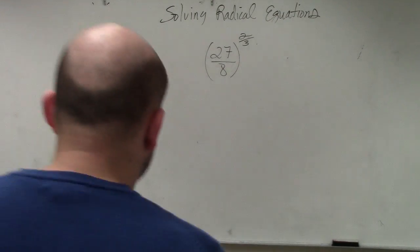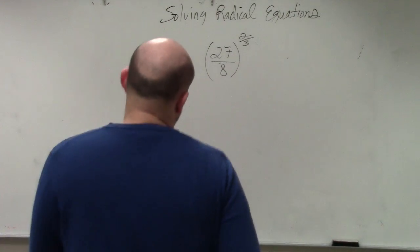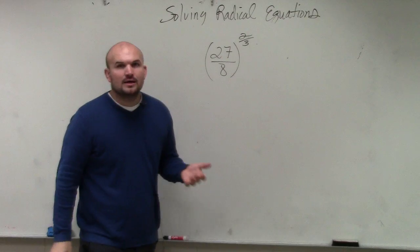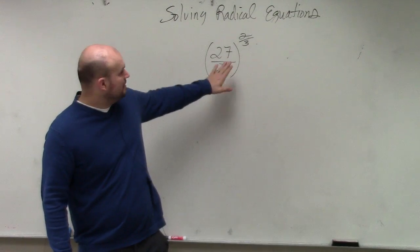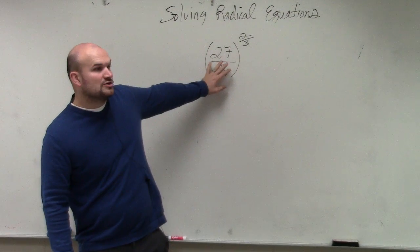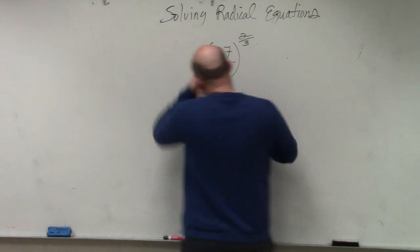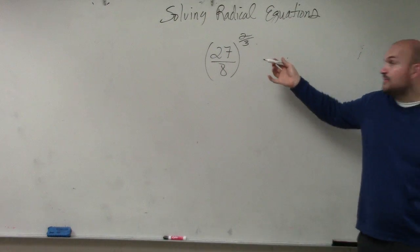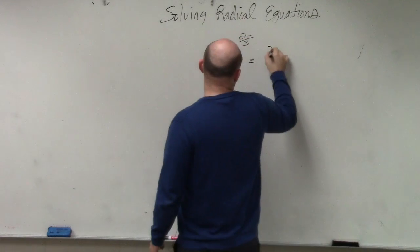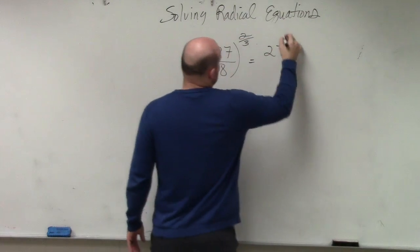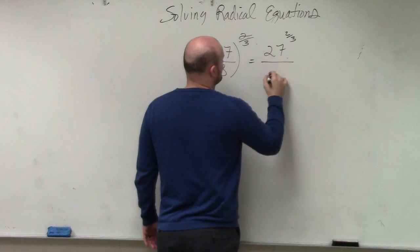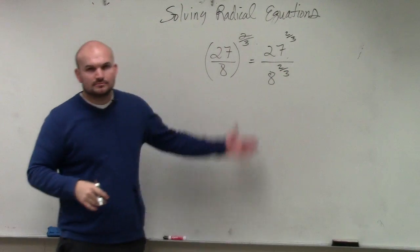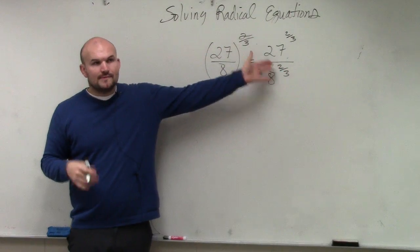The main important thing when doing this problem is looking at it using the power of quotient rule. The power of quotient rule, if you remember, is whenever you have a quotient raised to a power, you can simply break that up by rewriting it as 27 to the 2/3 over 8 to the 2/3.